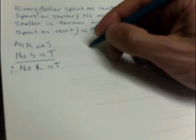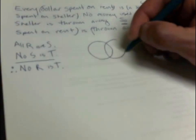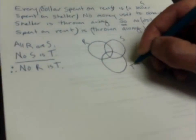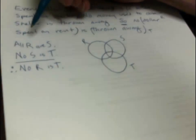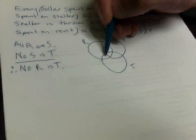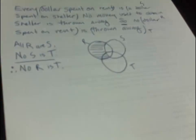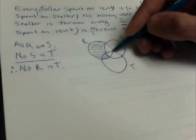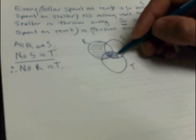Now we've abbreviated our argument and we're ready to check it on a three-circle Venn diagram. We need a circle for R, a circle for S, and a circle for T. All R are S is a shading premise — we have to eliminate everything that's in R but not in S. There are two such regions, so we shade those. No S is T is also a shading premise — it says there's nothing in both S and T, so we eliminate the football-shaped overlap between S and T.